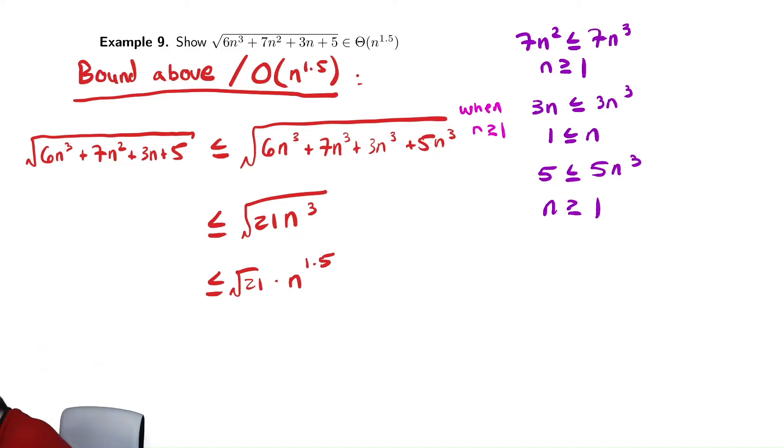So, we're going to call the constant out front of n to the 1.5, c2. And then, the n naught for this is equal to 1.